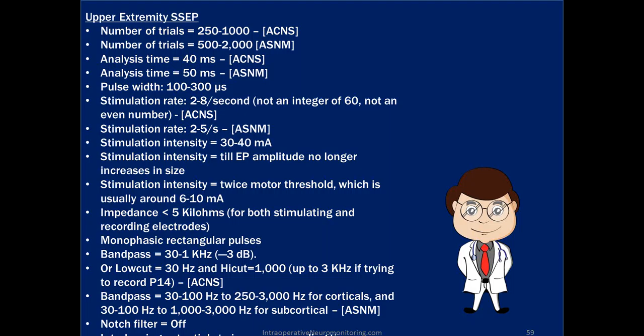Stimulation rate according to the ASNM is 2 to 5 per second. General consensus says you should not stimulate over 9 times per second in the upper extremity. In the lower extremity, stimulating that fast causes cortical degradation or amplitude reduction, so don't go above 5. It's 5 per second for the lower extremity and 9 for the upper extremity — you can go much faster if doing BAERs.